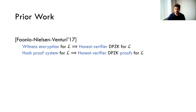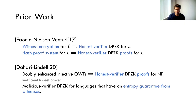In the positive direction there has been some work. Work by Fania, Nielsen and Venturi showed that if a language has a witness encryption, you can get the slightly weakened notion of honest verifier DPZK, meaning zero knowledge is only required to hold for honest verifiers and not necessarily malicious ones. With slightly stronger properties, such as a hash proof system, you get stronger DPZK properties like soundness against computationally unbounded cheating provers. Very recently, Dahadi and Lindell improved the assumptions from witness encryption to doubly injective one-way functions, constructing DPZK for languages with certain entropy guarantees from their witnesses.